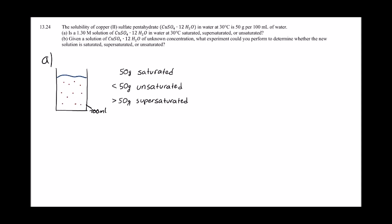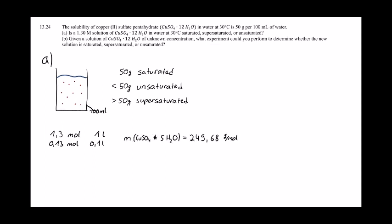The solution given is a 1.3 M solution, which means in 1 liter of water there are 1.3 moles of copper sulfate pentahydrate. So in 100 milliliters, there are 0.13 moles. We also need the molar mass of copper sulfate pentahydrate, which is 249.68 grams per mole, meaning 1 mole weighs 249.68 grams.